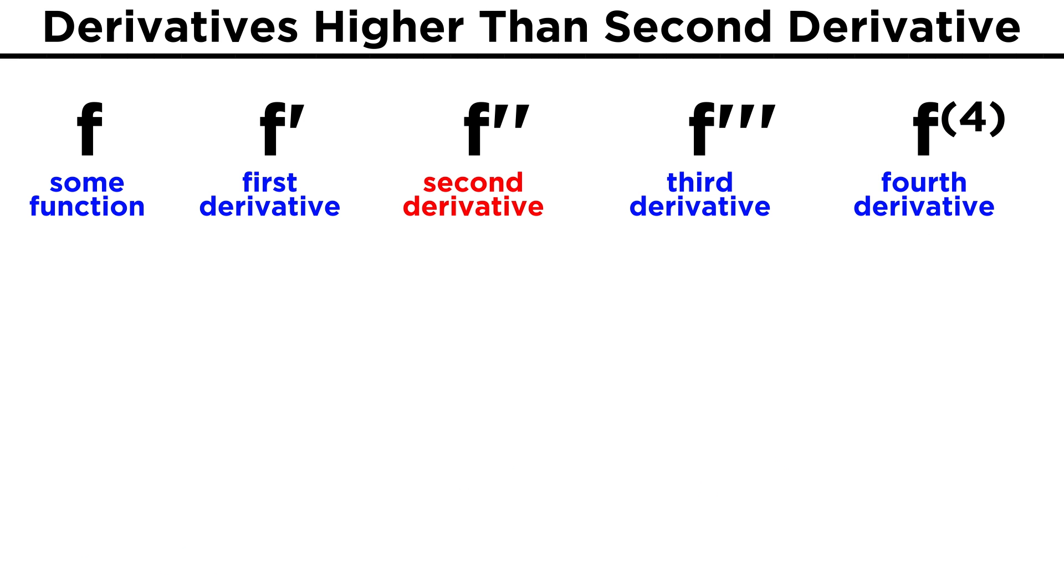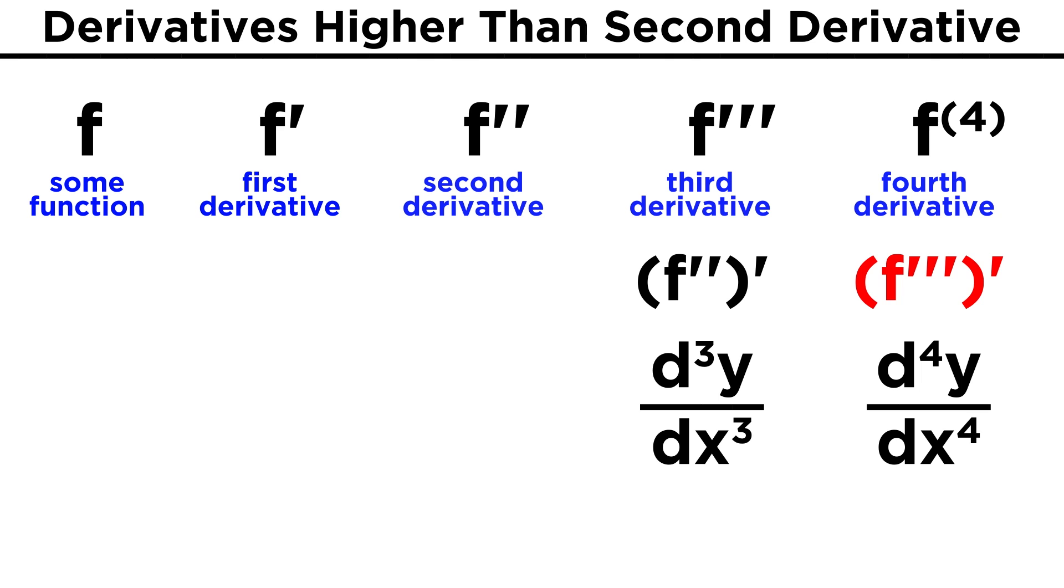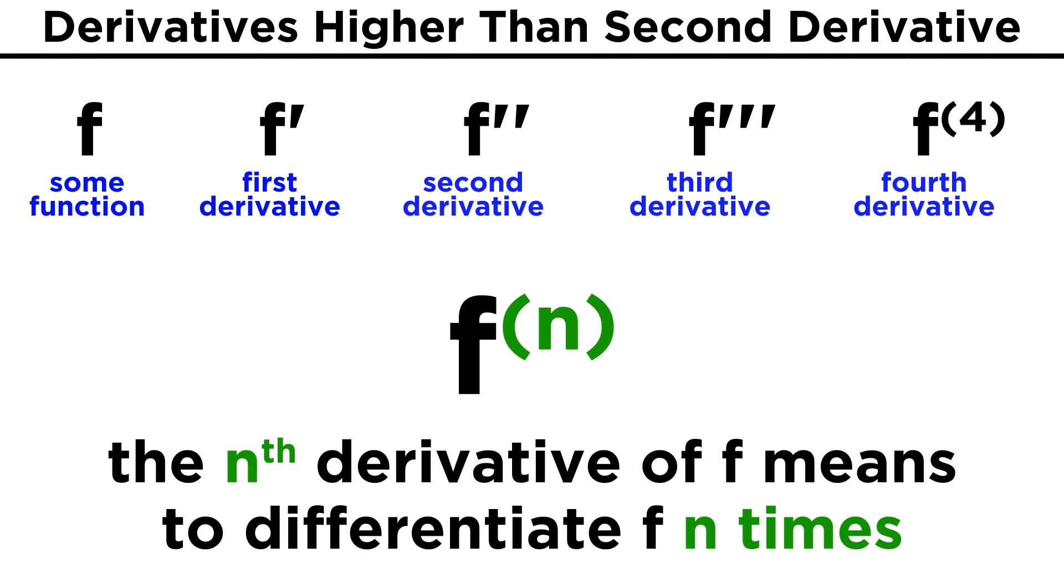Now although we won't go beyond the second derivative all that often, there is nothing stopping us from taking a third derivative, or a fourth, or as many as we like. The third derivative will simply be the derivative of the second derivative, which we can write as f triple prime, or as d cubed y over dx cubed. For the fourth derivative, it's getting to be too many primes, so we just write f and then the number four in parentheses as a superscript. From there, taking the nth derivative will look like this, with the n up here, and we can get it by differentiating a function n times.